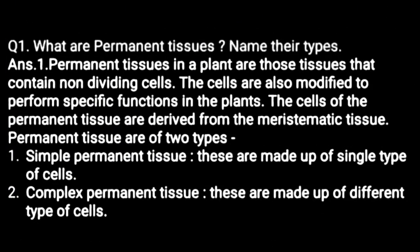Let us discuss questions. What are permanent tissues? Name their types. Permanent tissues in plants are those tissues that contain non-dividing cells. The cells are also modified to perform a specific function in the plants. The cells of the permanent tissues are divided from the meristematic tissues. Permanent tissues are of two types: simple permanent tissues, made up of a single type of cells, and complex permanent tissues, made up of different types of cells.